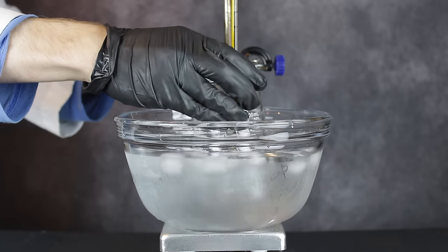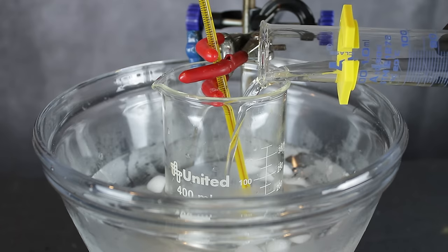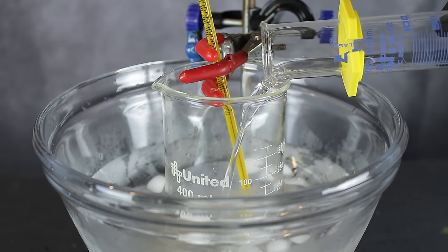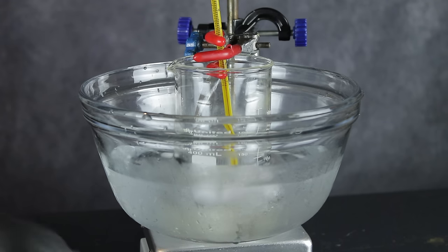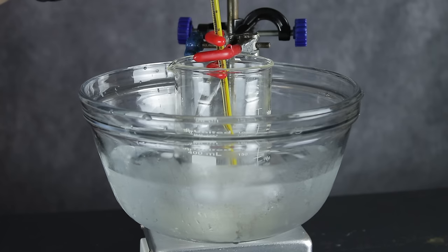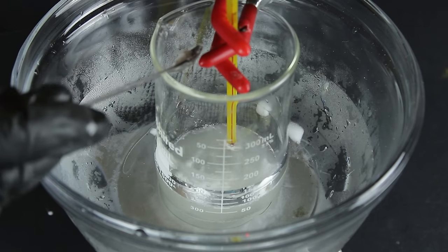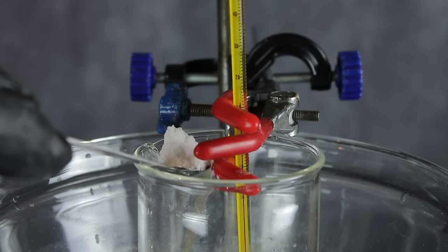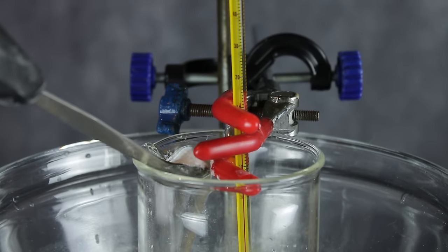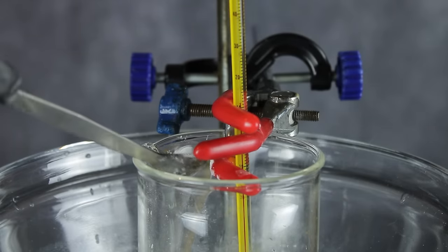To start, a 400 milliliter beaker was placed into an ice bath and filled with 52 milliliters of concentrated sulfuric acid. Once the acid cooled down to about 15 degrees celsius, 30 grams of urea was added at a rate slow enough to keep the temperature below 25°C. It's best for the urea to be a fine powder when you do this, since the large crystals that come straight out of the bag take forever to dissolve.